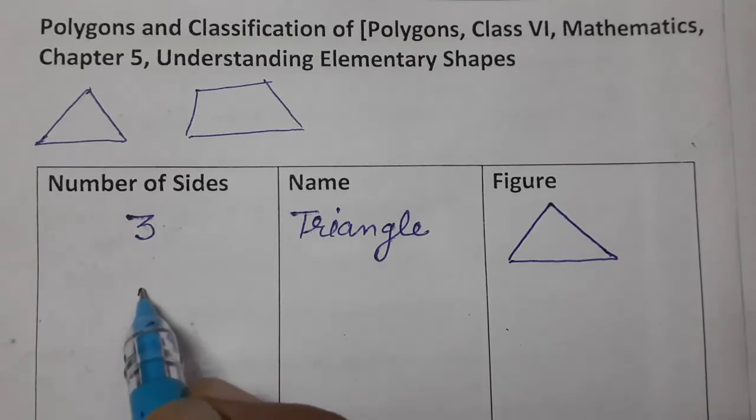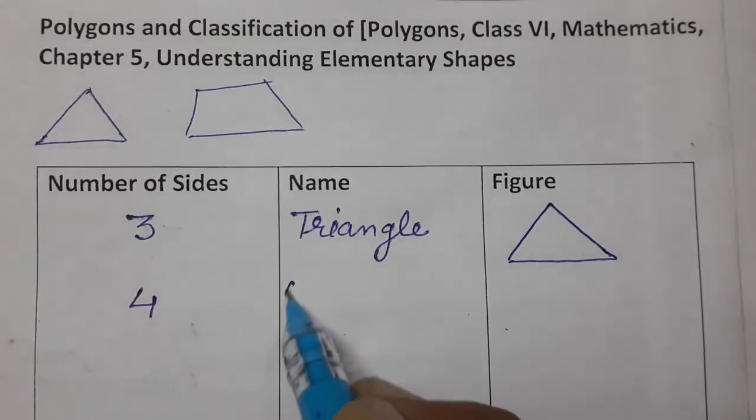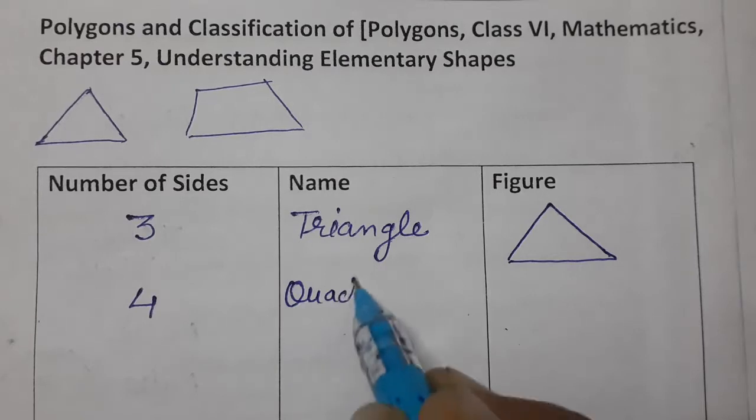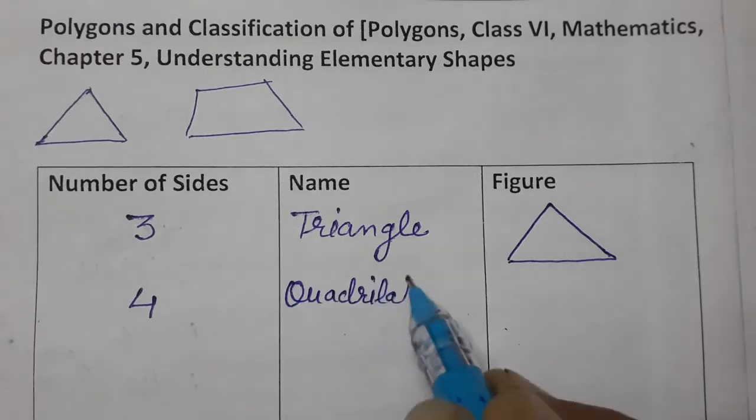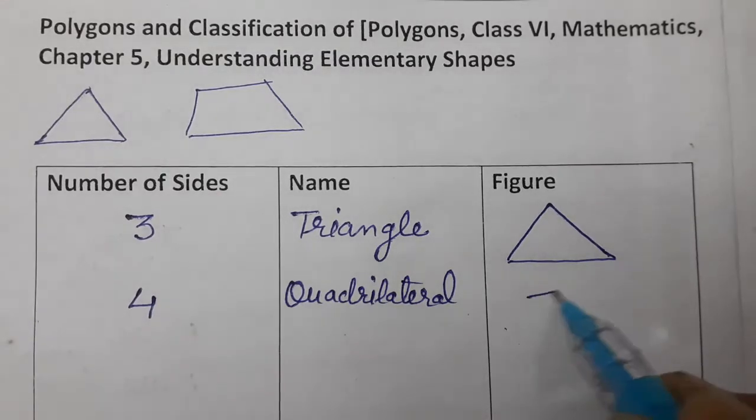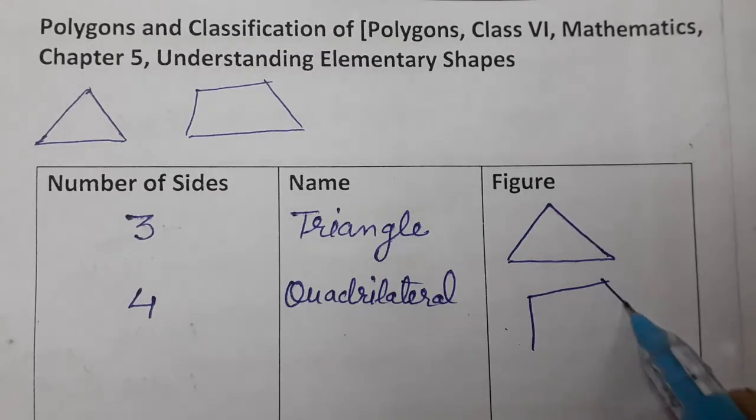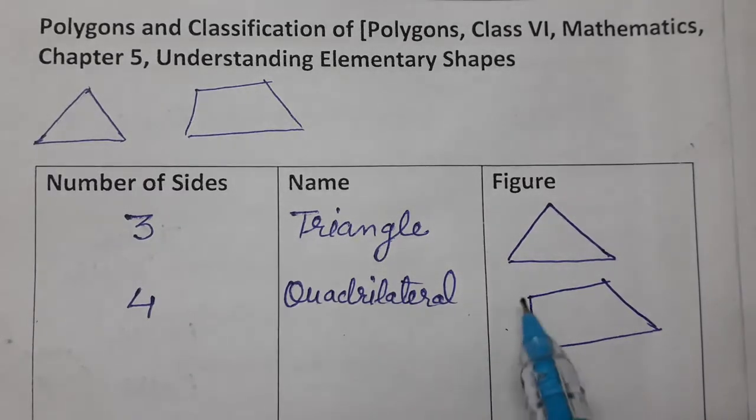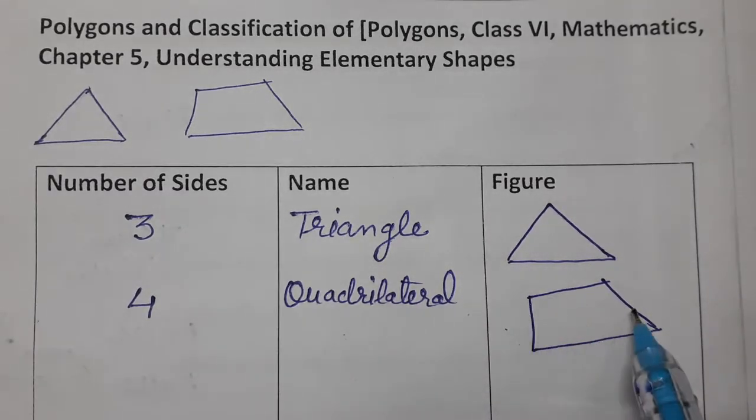Now if there are 4 sides, then we call it a quadrilateral. 4 sides - maybe parallelogram, rectangle, square, anything we can make. Only 4-sided figure: 1, 2, 3, 4, 4-sided figure.